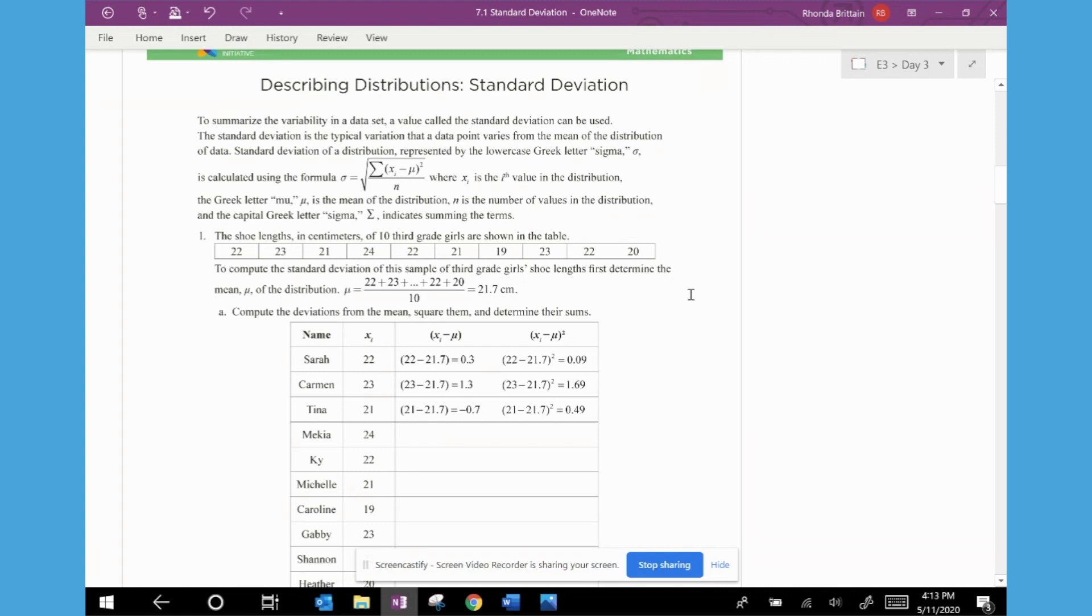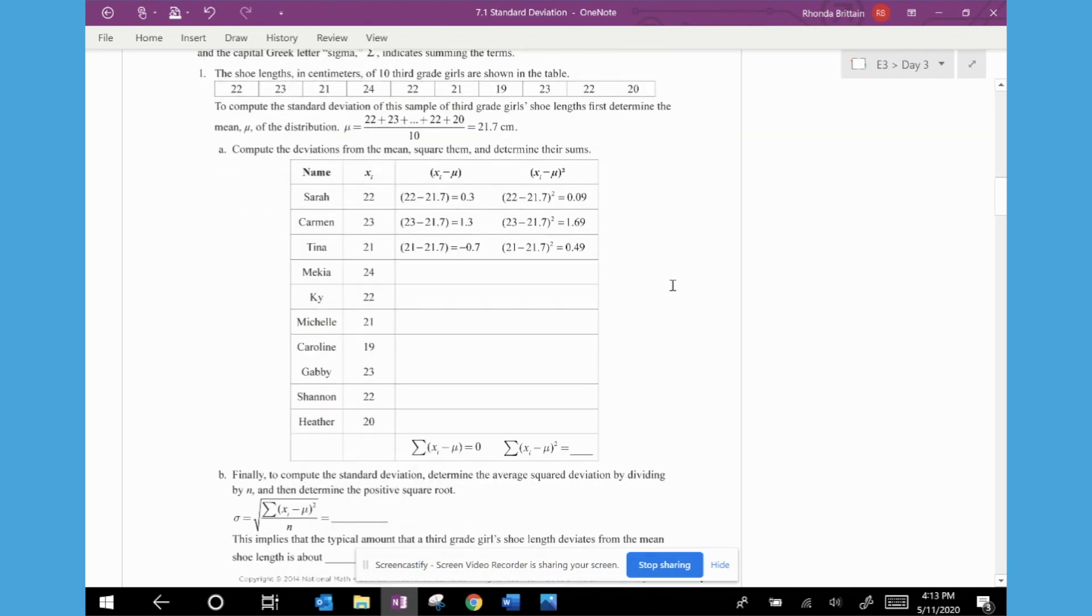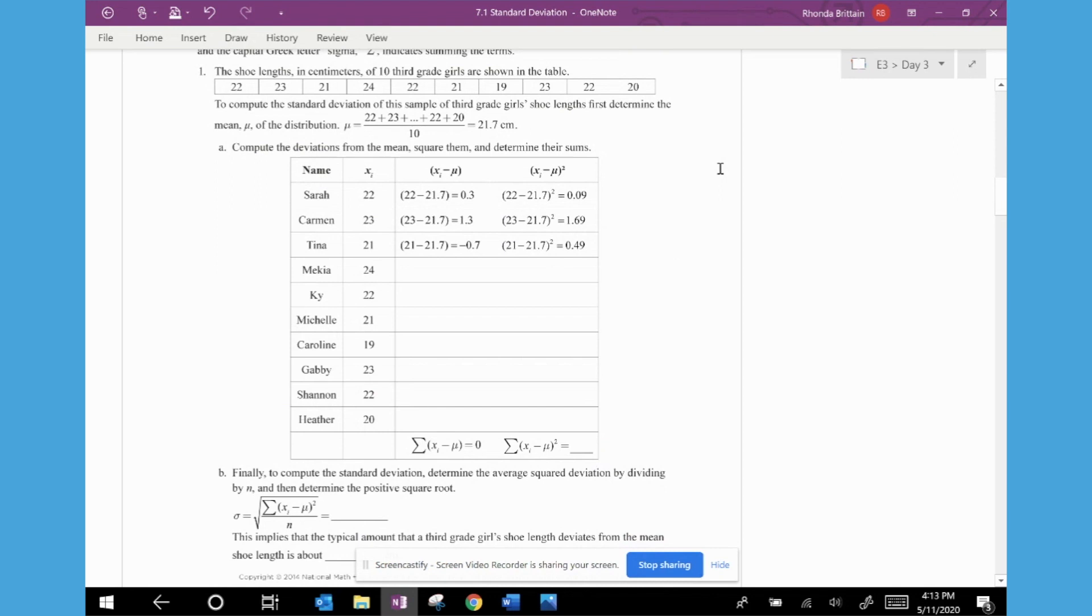The derivation of the standard deviation is really going to be best seen if you break it down into several columns. So if you're doing some other examples, I would recommend setting up the tables like this. We have the data values in column one, and then column two is going to be the deviation that the data values are from the mean. So when we look at Sarah, her data value or shoe length was 22, and if we subtract the mean, we get 0.3.